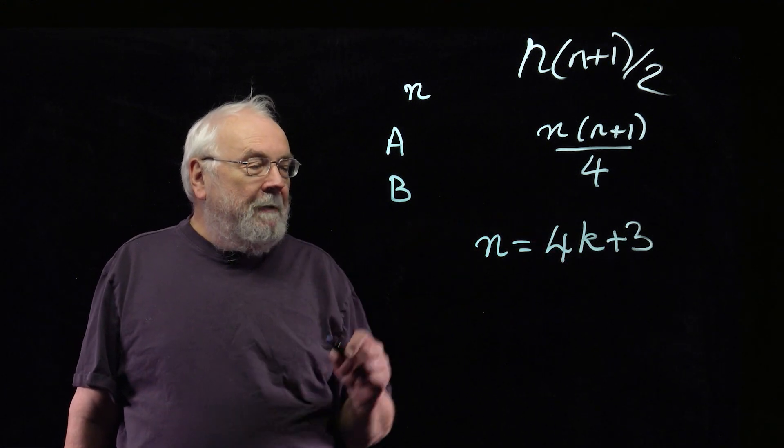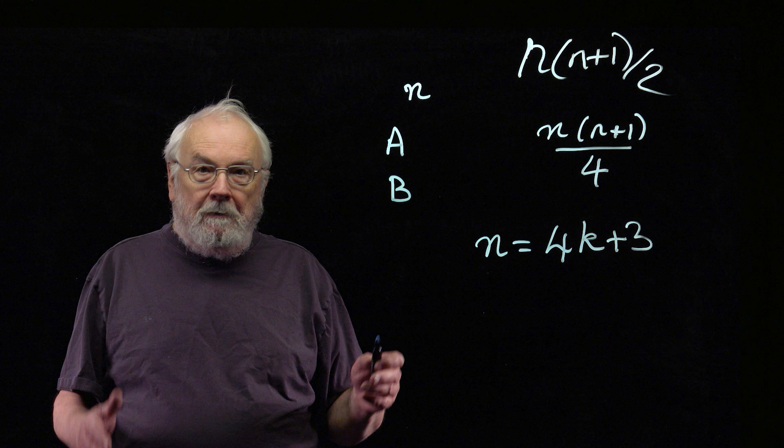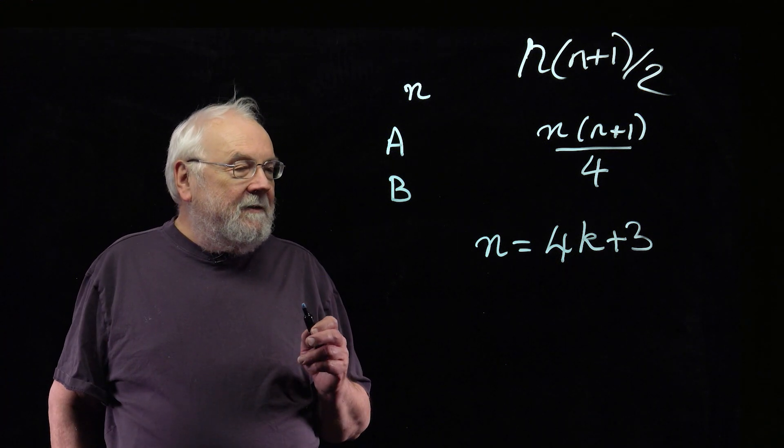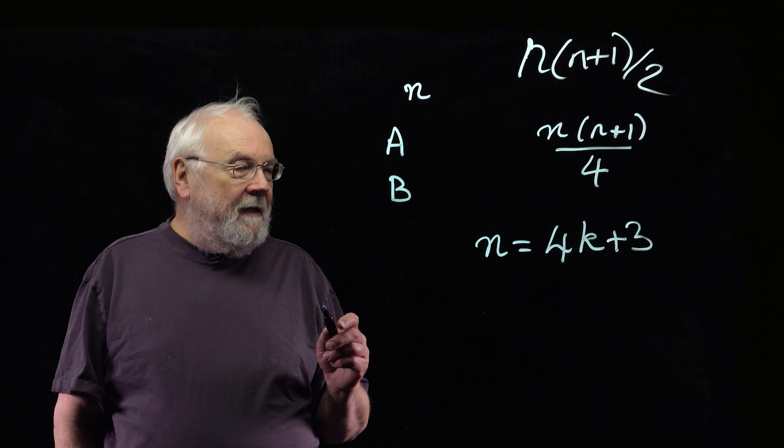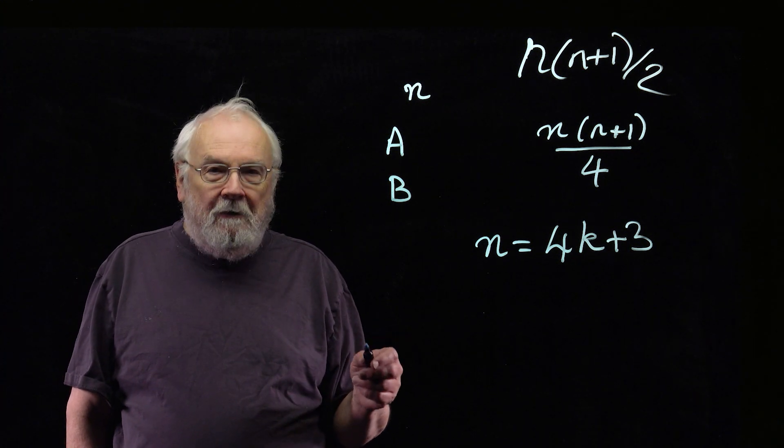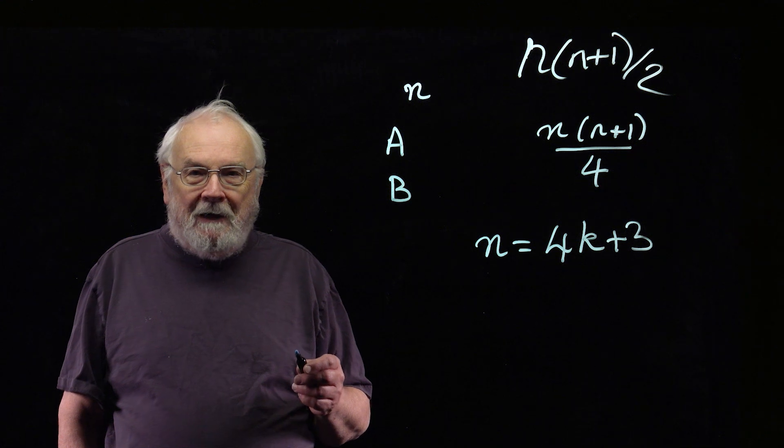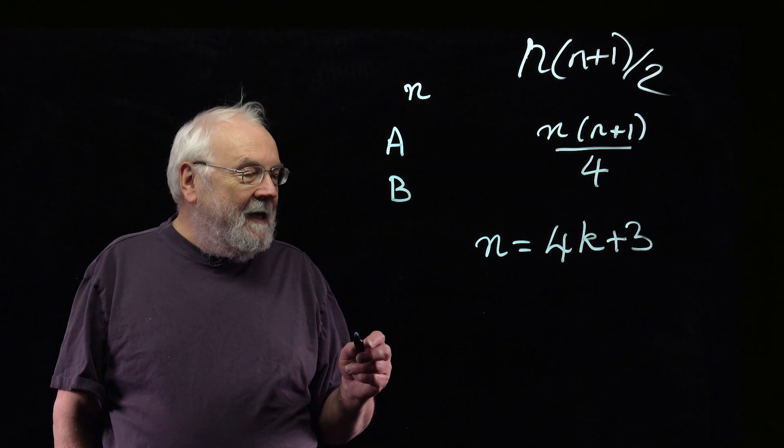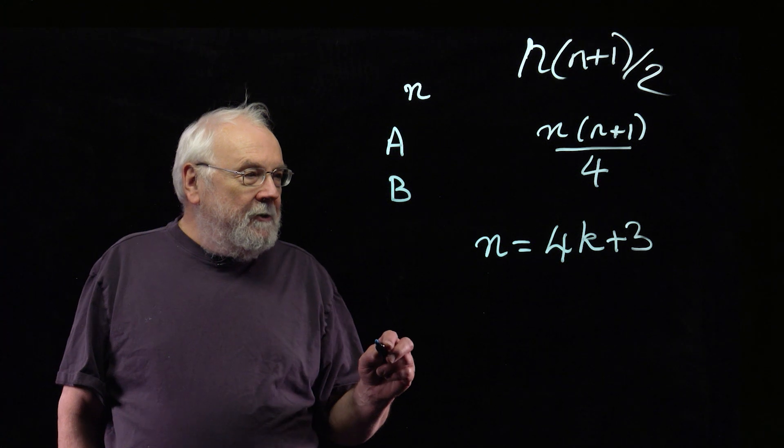So now we've got 4k+3 numbers, and we want to put them into two groups of almost the same size so that the two groups have the same sum. There are lots of ways of doing this, and it's going to be a real problem in marking because I'm sure the clever students are going to come up with all sorts of methods. Let me show you one.